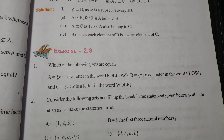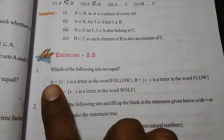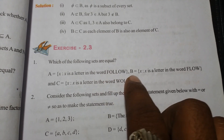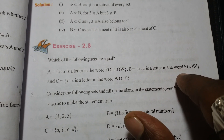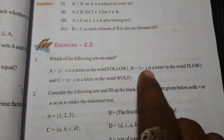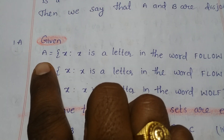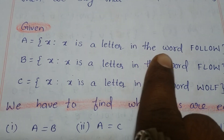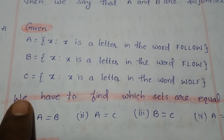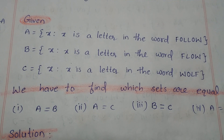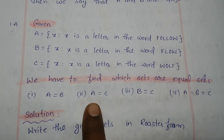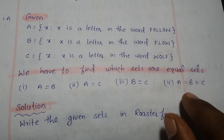Problem 2.3: Which of the following sets are equal? Set A is given as X such that X is a letter in the word 'follow,' B is equal to X such that X is a letter in the word 'flow,' and C is given as X such that X is a letter in the word 'wolf.' We have to find which sets are equal — whether A equals B, A equals C, B equals C, or all three are equal.